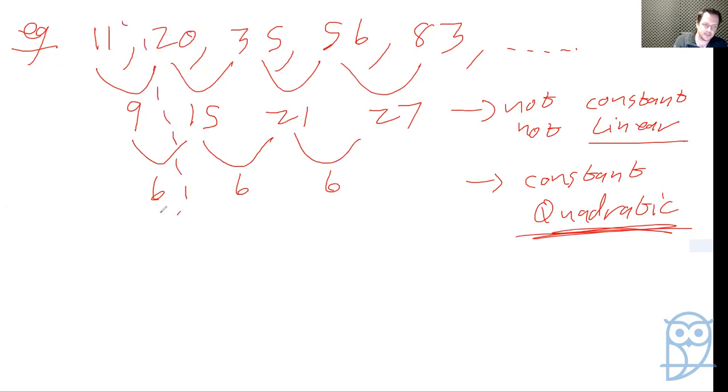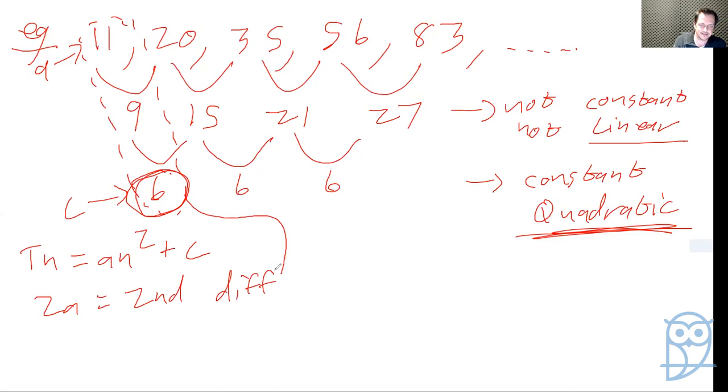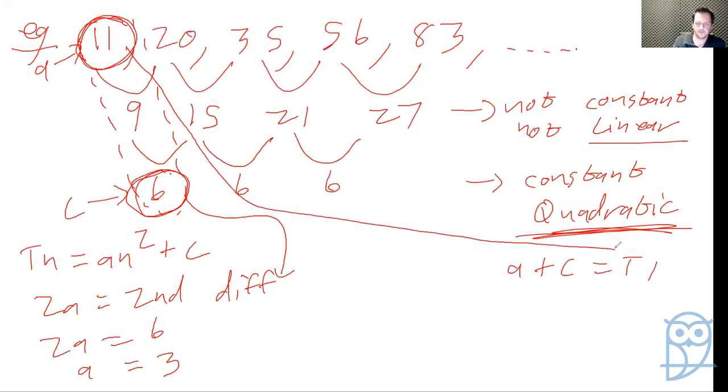So remember I said to you, you need these values here. This one will help you find c, this one will help you find a. So Tn is an squared plus c. And 2a equals my second difference. And my second difference here is 6. So 2a equals 6, a equals 3. And then we have a plus c equals my first term, which is this one here. Yes, you are totally right. That is meant to be a. Thank you very much. That is meant to be c.